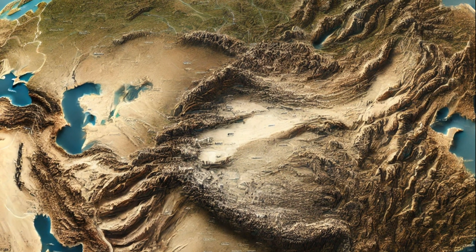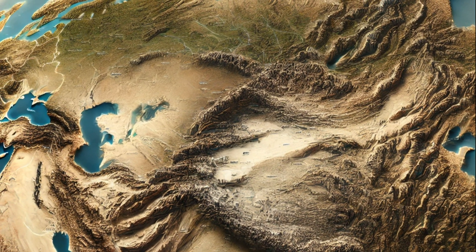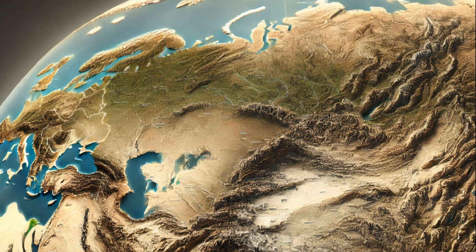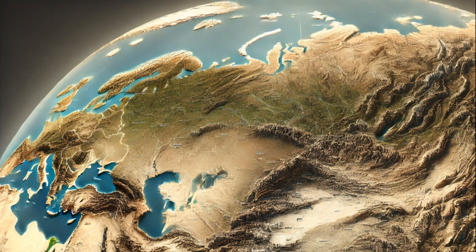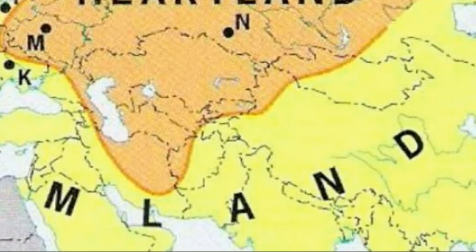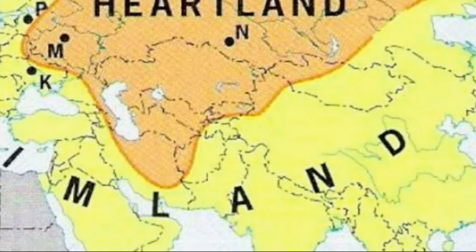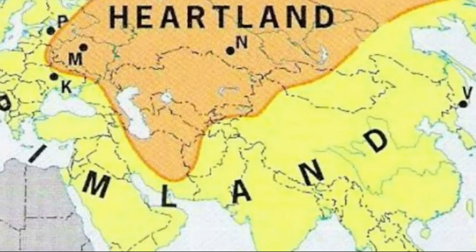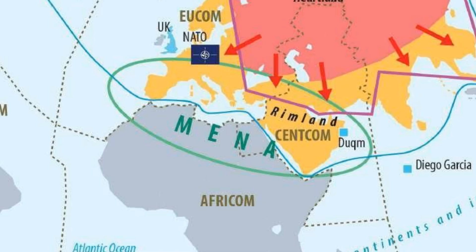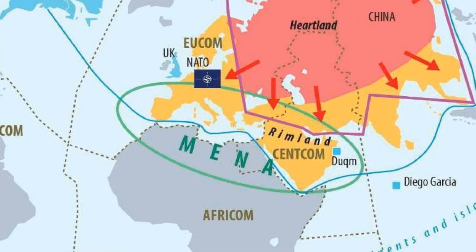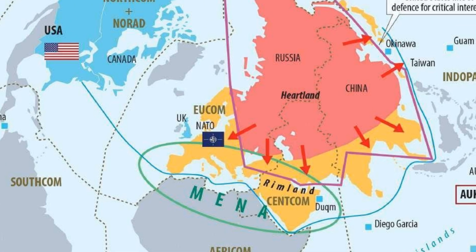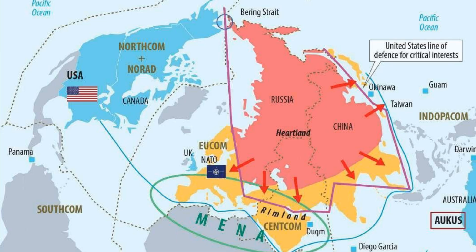Welcome to the Department of Knowledge. Today, we're delving deep into two of the most foundational theories that have shaped the landscape of modern geopolitics: the Heartland Theory and the Rimland Theory. These concepts are pillars of strategic thinking, deeply rooted in the idea that geographical positioning, particularly the control of key land and maritime spaces, can determine the balance of power among nations. Our journey will explore the origins of these theories, the historical contexts that inspired them, and how they continue to influence international relations to this day.